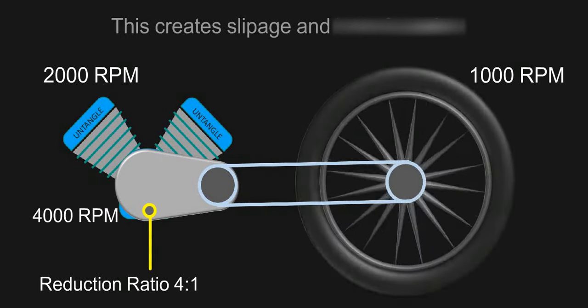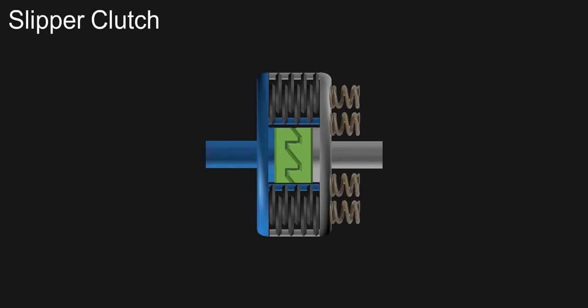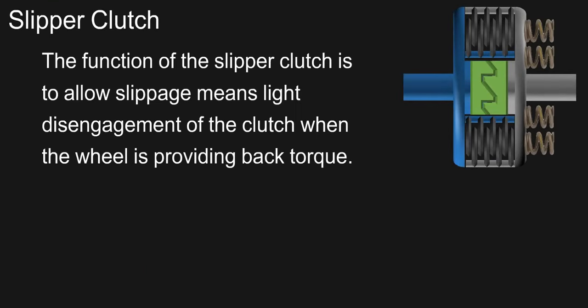To solve this problem comes the role of slipper clutch. The function of slipper clutch is to allow slippage, means light disengagement of clutch when the wheel is providing back torque.